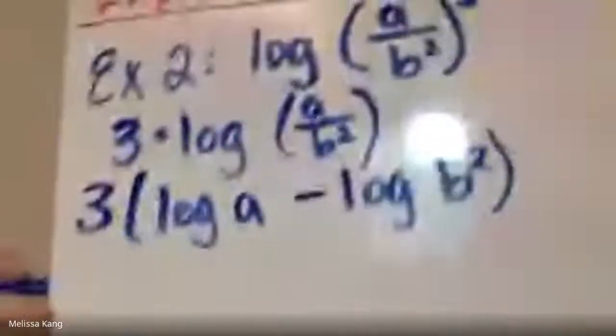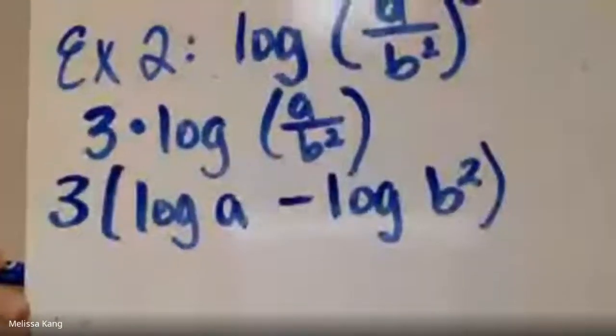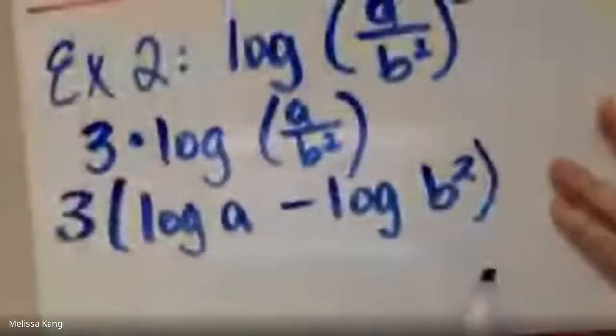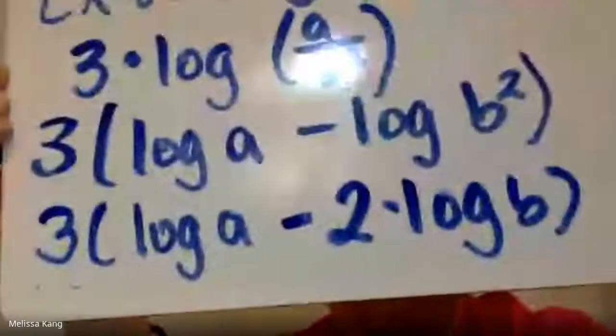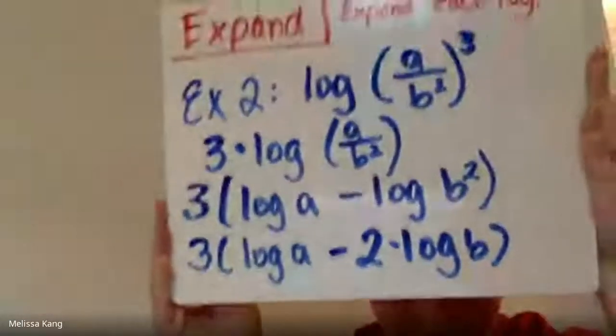So I have log a minus log b squared. Log a, and that three is on the outside. There's a minus because there's division. Now the only thing to deal with is this square value. I have to move it in front of just that part, not the whole thing. So I have three parentheses log a doesn't change, minus, and then that two times log b. That does come out front, just that two. That two from this exponent, it just applies to here, so that's why it's there.